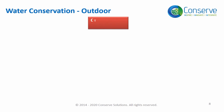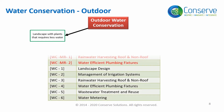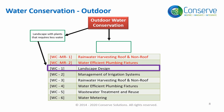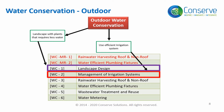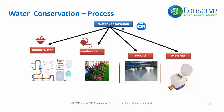Outdoor water consumption is mainly associated with landscape. There are three approaches to water conservation in landscape: number one, design landscape with plants that consume less water, addressed in Credit 1 — Landscape Design; number two, use an efficient irrigation system, addressed in Credit 2 — Management of Irrigation Systems; and number three, use non-potable water for irrigation, addressed in Credit 5 — Wastewater Treatment and Reuse.